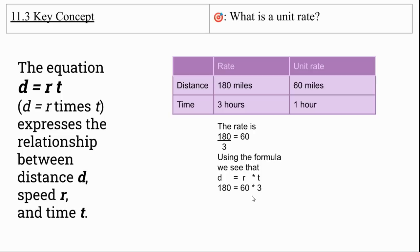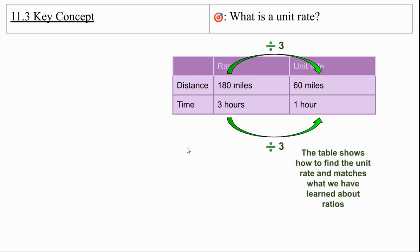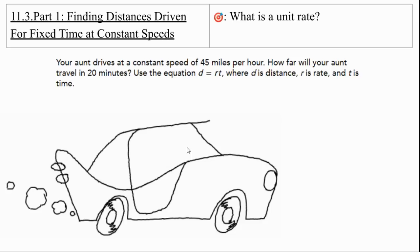But again, that can be really confusing at this stage in the game. So let's stick with what we know. We know that three hours to one hour and 180 to 60, we're going to use the same change here. This time it's getting smaller. So we're going to use division and we're going to divide by three on both of these. The table shows how to find the unit rate and matches what we've already learned about ratios.